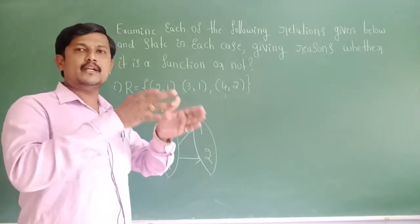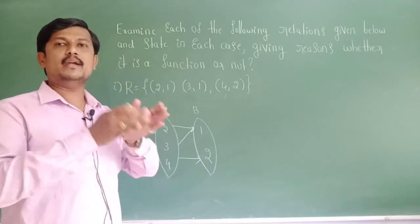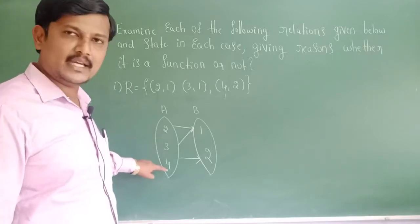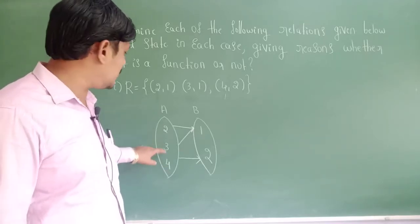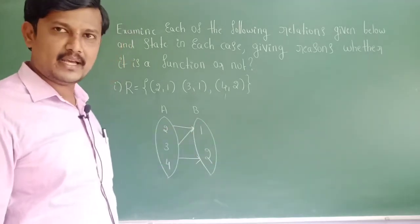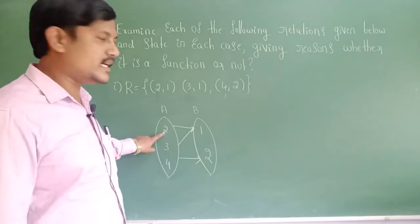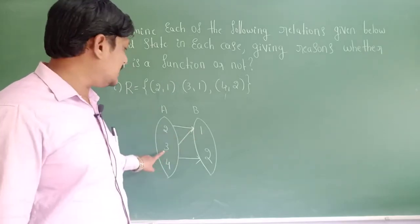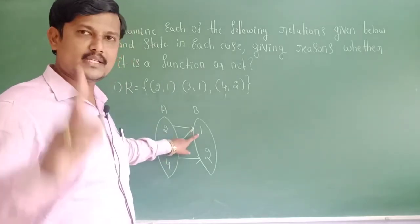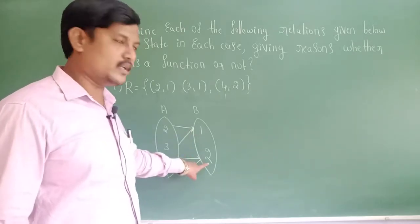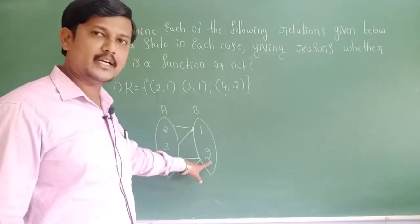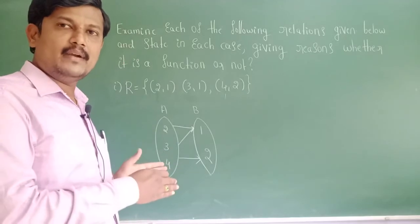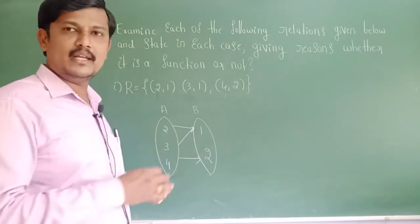Every element of set A has one and only one image in set B. Checking the first condition: every element of set A — that is 2, 3, 4 — are related to set B and each has only one image. 2 has one arrow mark, 3 has one arrow mark, and 4 has one arrow mark. Therefore every element of set A has one and only one image in set B.